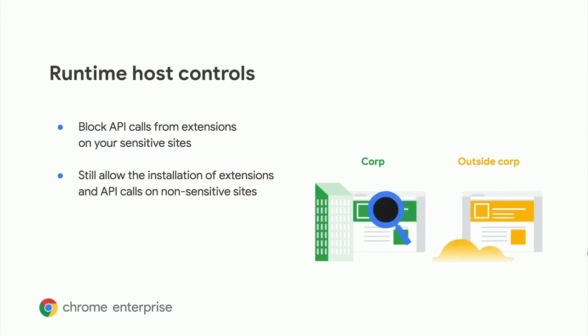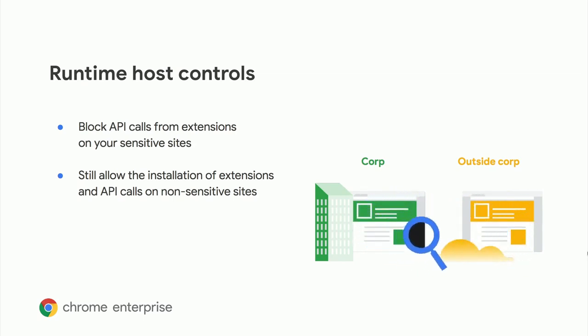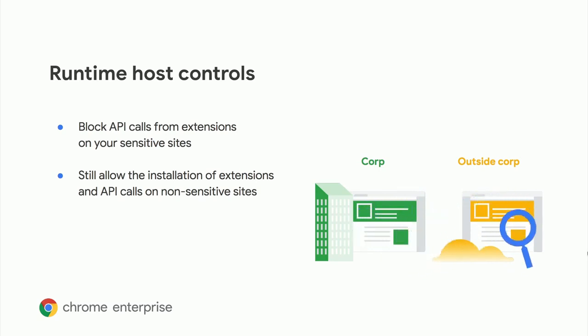The other category of risky behavior is around what site permissions an extension can have. There are extensions that can require access to all sites, which can be risky since this means access to all sites including precious corp sites — even for extensions whitelisted by traditional methods. But by managing extensions via runtime host controls, you can set a global policy to restrict all extensions from running on those corp sites deemed sensitive. By doing this, you have more confidence that any installed extension will never run on your corp sites unless you've given explicit exemptions. The benefit to users is that they can install more extensions from the Chrome Web Store without being blocked by more restrictive blacklist policies. As the graphic depicts, an extension can be installed and run fine on sites outside of corp sites, but will not work on corp sites.